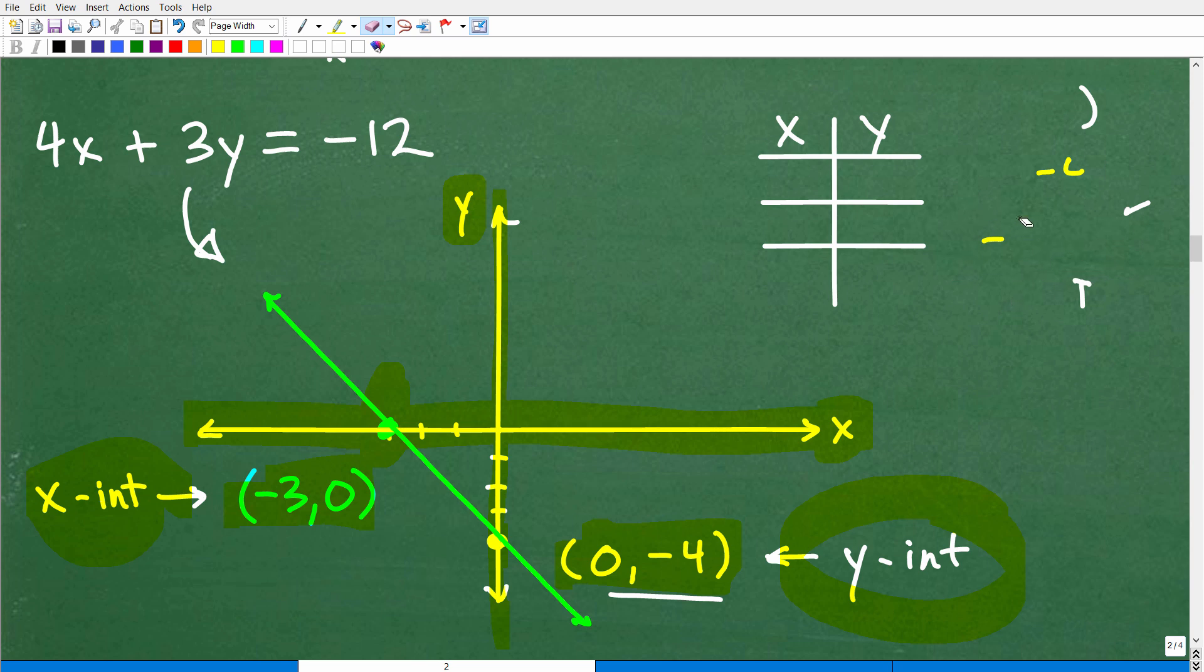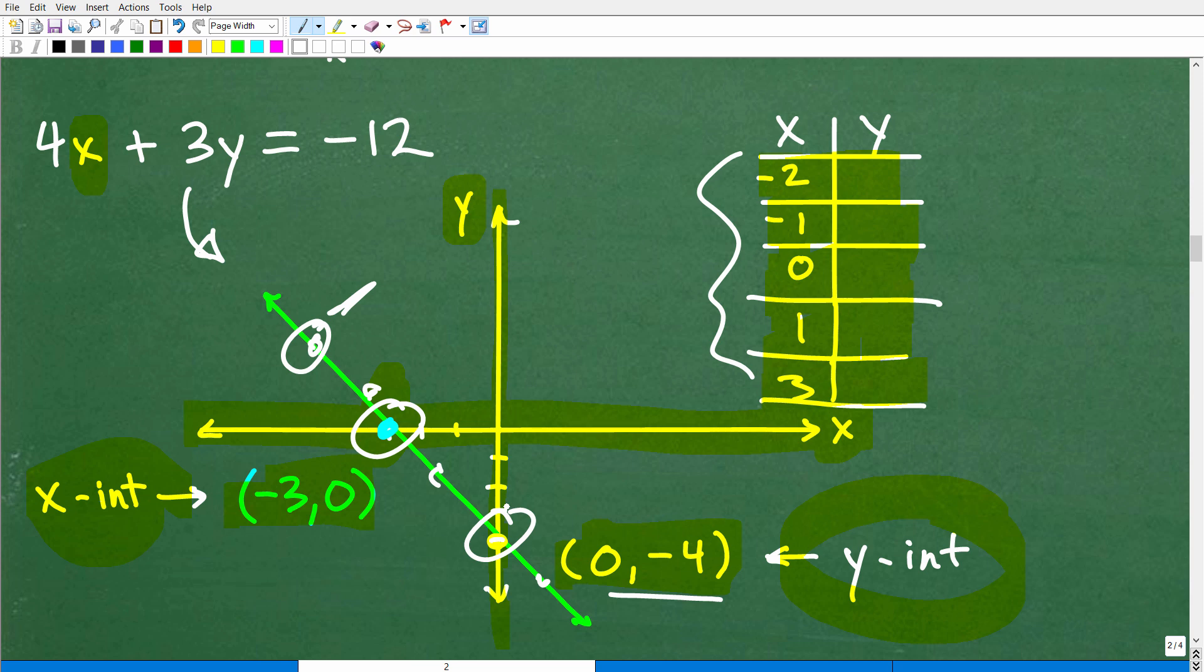This is how you graph linear equations using a nice little table of values, the 0, 0 table, to find the X and Y intercepts. But could we graph this line using a table of values? Of course we can. You could put in numbers like negative 2, negative 1, 0, 1, 3. We could plug in these values for X, solve for Y, and plot all these points.